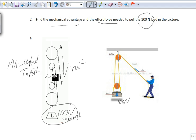One rope holding up, two, three, four ropes. This one does not count. So the MA is 4.